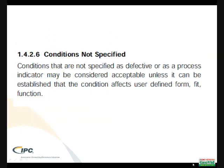You have to look at paragraph 1426, where the condition has not been specified. All discussion in IPC A610 addresses non-common conductors being defective. Paragraph 1426 states that conditions not specified as defective or as a process indicator — as is the case here — may be considered acceptable, unless it can be established that the condition affects user-defined form, fit, and function. So IPC A610 says it's acceptable, but check your customer requirements to be sure.